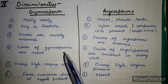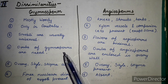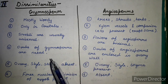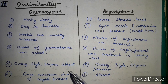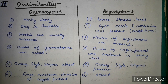So these are basically the affinities of gymnosperms — their similarities with pteridophytes and angiosperms, and their dissimilarities, which we have discussed. This was the topic of the affinities of gymnosperms. If you liked the video, please subscribe, like, share, and comment. If you have any questions, you can comment. Thank you so much.